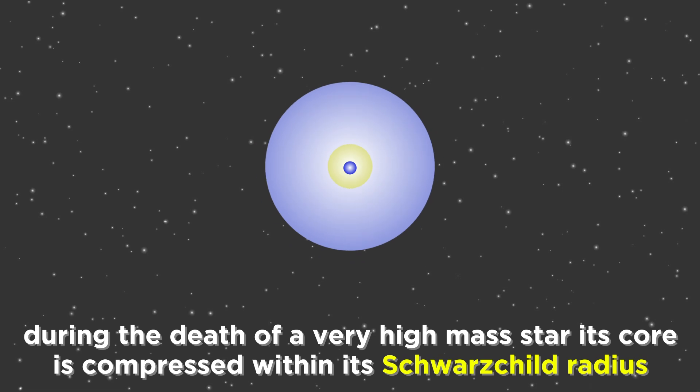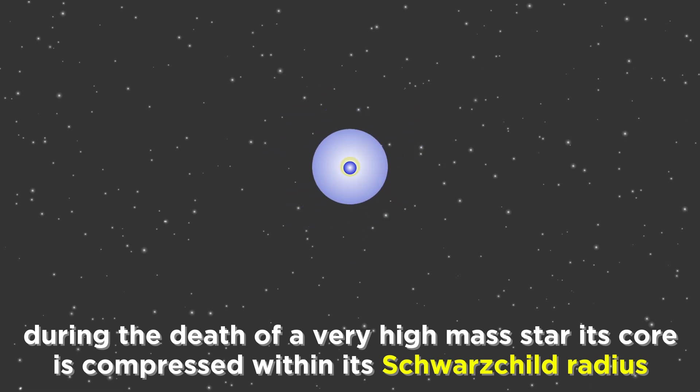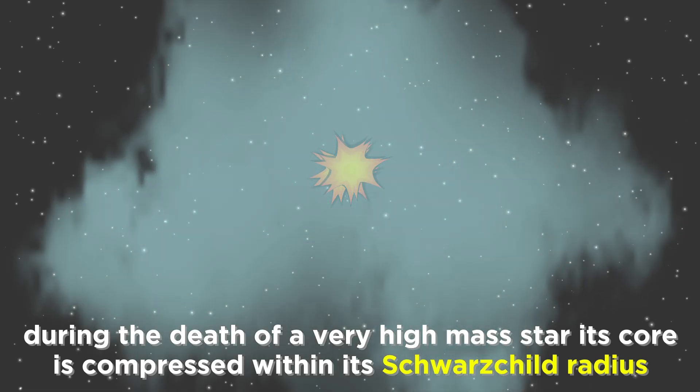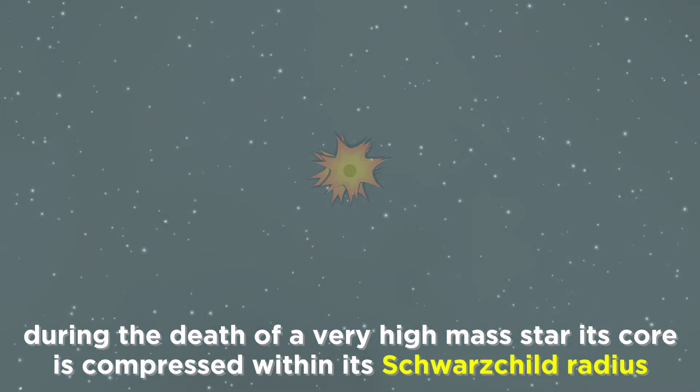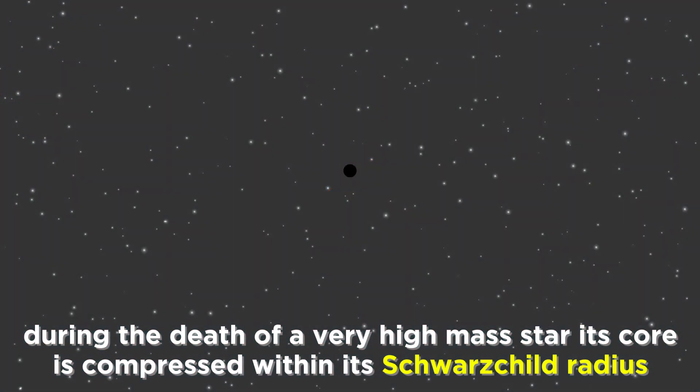When a high mass star collapses at the end of its life, it is compressed well beyond its Schwarzschild radius, which is the most common way that the universe produces a black hole.